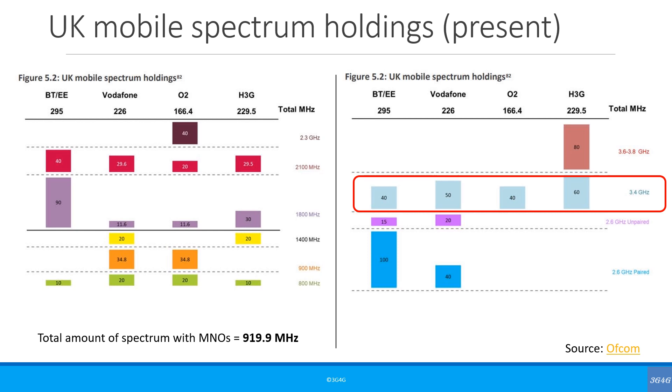If we look at the UK for example, only the capacity layer band was auctioned for 5G in the 3.4 GHz band. The operator 3 has additional spectrum which it acquired when it bought UK broadband, but from the recent 5G auction point of view, the operators received between 40 and 60 MHz of capacity layer spectrum. This is far from an ideal scenario.